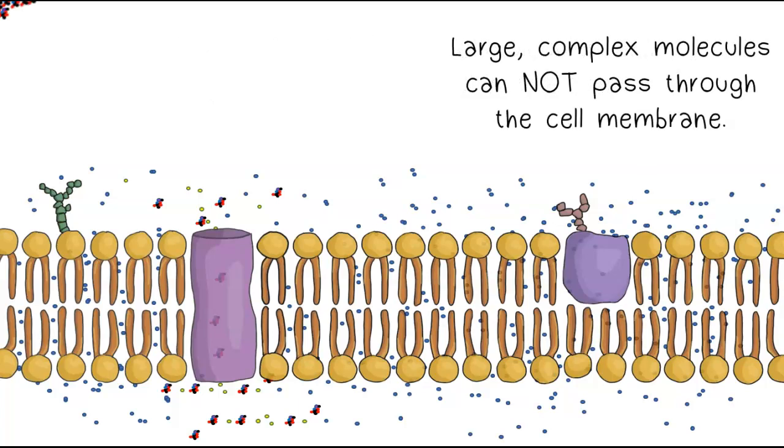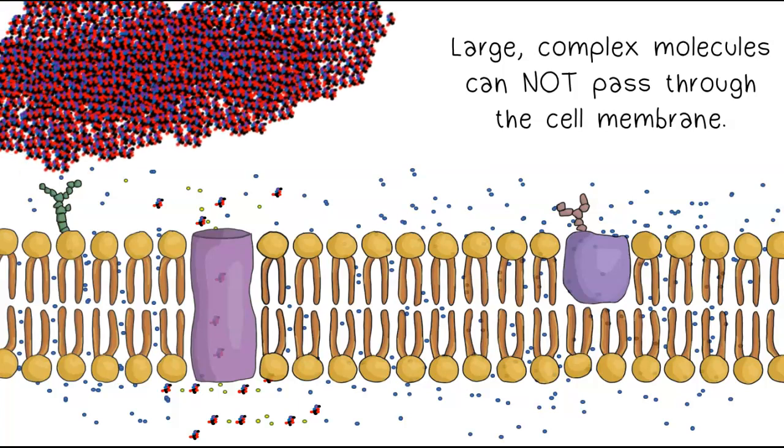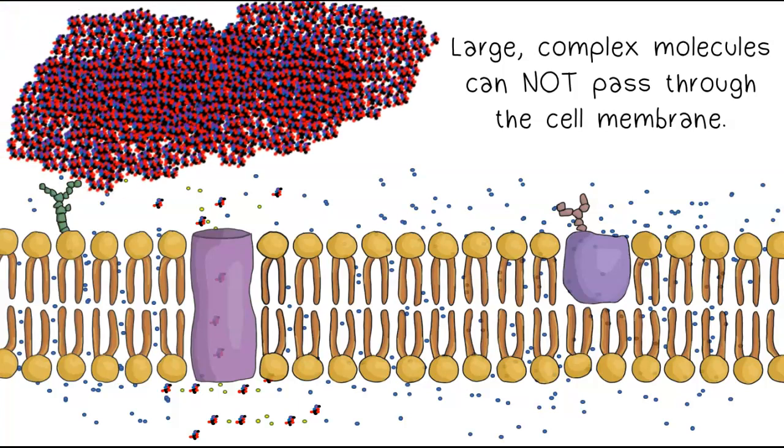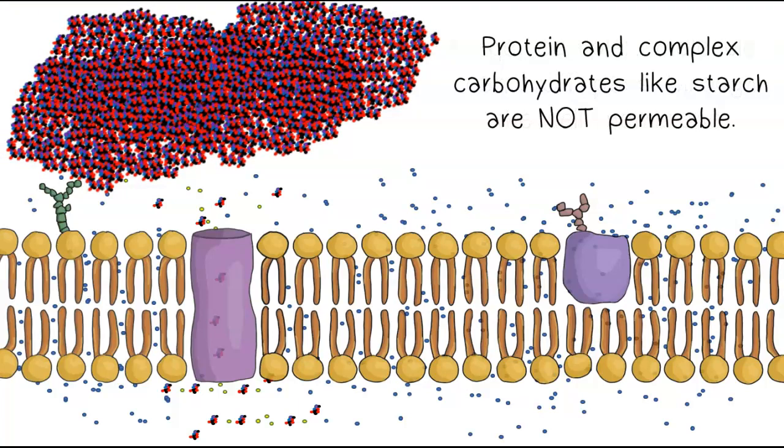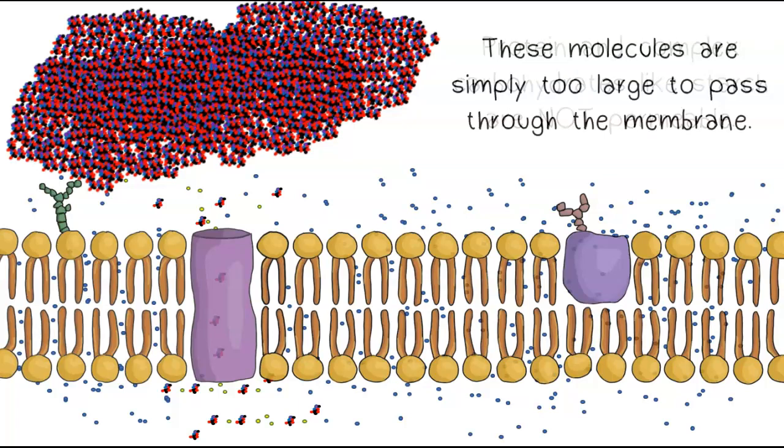Large, complex molecules cannot pass through the cell membrane. Protein and complex carbohydrates like starch are not permeable. These molecules are simply too large to pass through the membrane.